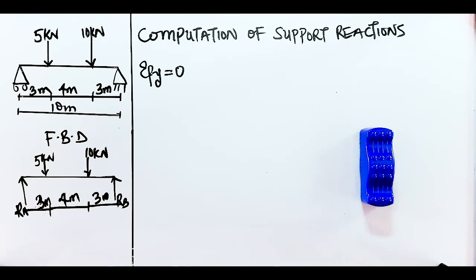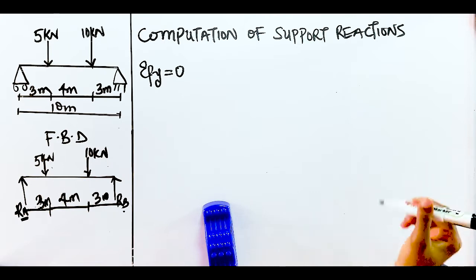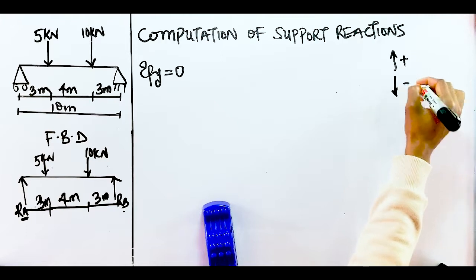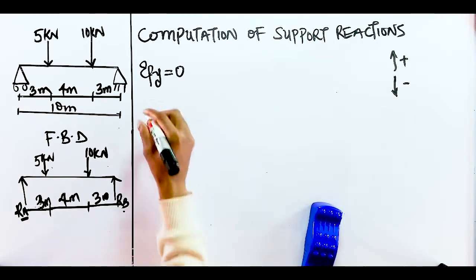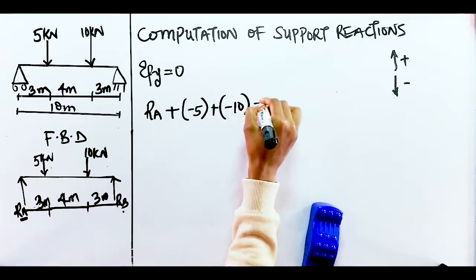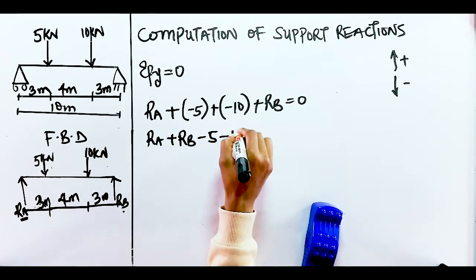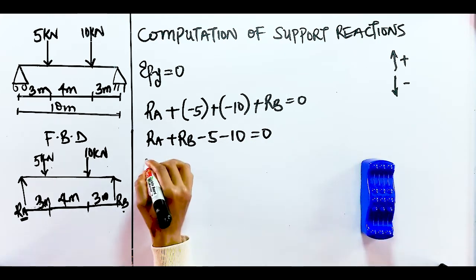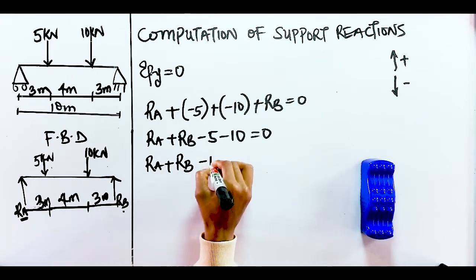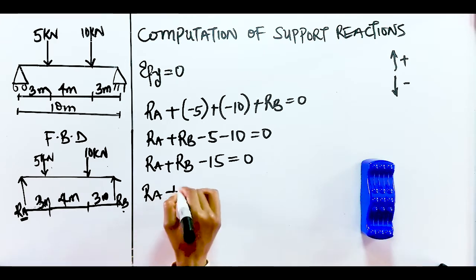Summation of Fy means summing all vertical forces. Looking at the diagram, we have four vertical forces: RA, 5 kilo Newton, 10 kilo Newton, and RB. Forces acting upwards are positive and forces acting downward are negative. So: RA − 5 − 10 + RB = 0, which gives us RA + RB − 15 = 0, therefore RA + RB = 15 kilo Newton. We take that as Equation 1.